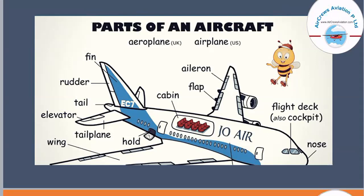Next to that we have flaps. Flaps have basically two functions: firstly, they are used to generate more lift at the time of takeoff, and secondly, they are used to decrease the lift when an aircraft has to land.